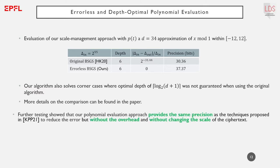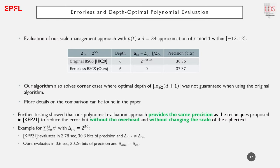A further experiment shows that our algorithm provides the same precision as the scale-managing techniques proposed by Kim, Papadimitriou, and Polyakov, but without the overhead and without changing the output ciphertext scale. For example, both techniques give a precision of 30 bits for the evaluation of the sum of powers of x from 0 to 63, but ours is close to 5 times faster and does not modify the output ciphertext scale.